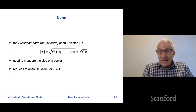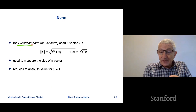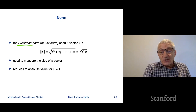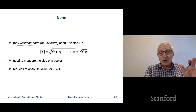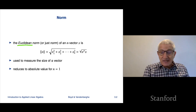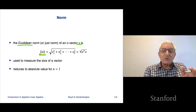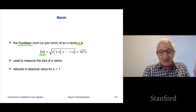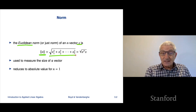So the norm of a vector — and this is specifically called a Euclidean norm. In this course, we're just going to call it the norm because it's the only norm we're going to use. There actually are other norms that are widely used, but by far the most widely used norm is the Euclidean norm. Here's what it is: given an n-vector x, the norm is denoted with double bars on either side of x. It's the square root of the sum of the squares. That is the norm of a vector.